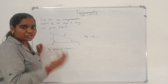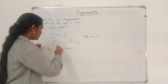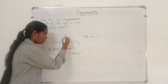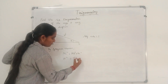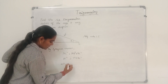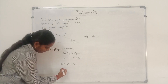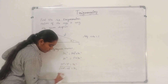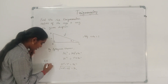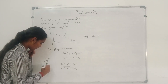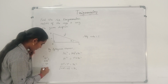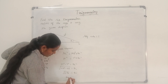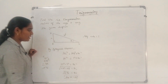By Pythagoras theorem, hypotenuse squared equals the sum of squares of the other two sides. So AC² = AB² + BC², which gives 25² = 7² + BC². Therefore BC² = 625 − 49 = 576, and BC = √576 = 24 cm. So the adjacent side value is 24.